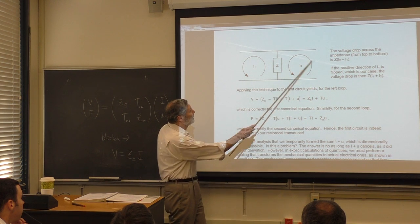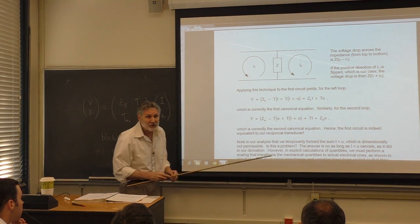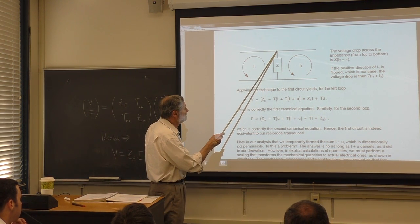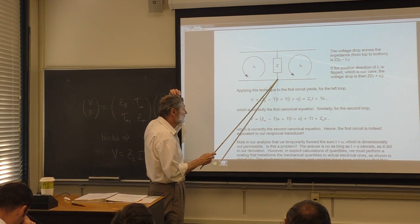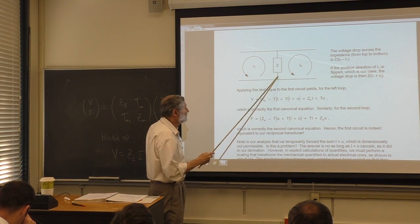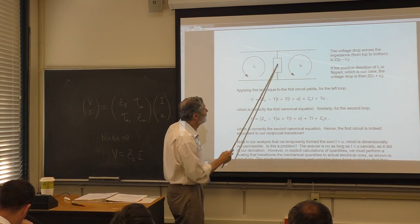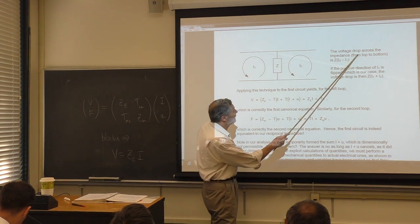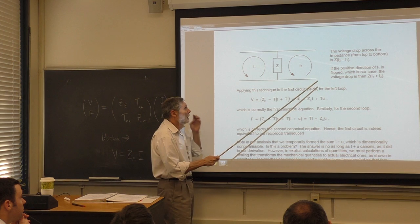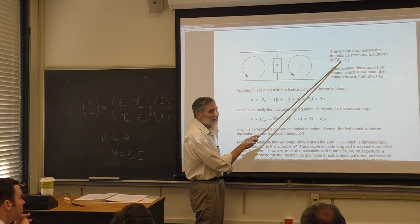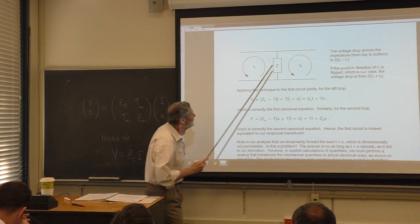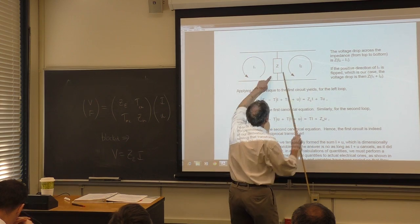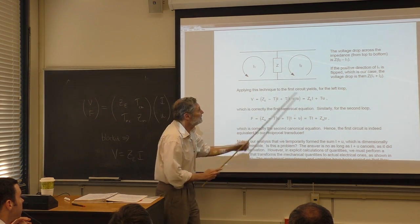Applying Kirchhoff's loop rule to the first loop: the voltage V equals the drop across (Zₑ − T) times I, plus the drop across T times (I + u). Simplifying: the T·I terms cancel, leaving V = Zₑ·I + T·u — which is the first canonical equation. Verified.